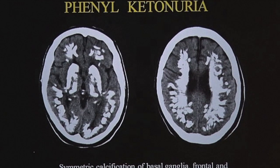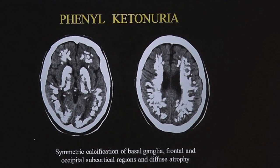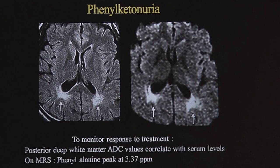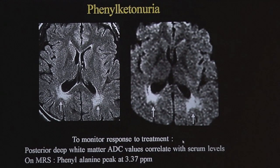In advanced cases, you get extensive calcification in the basal ganglia and periventricular white matter. Many clinicians use diffusion and absolute ADC values to check response to a ketone-free diet on MRI. If the patient is responding, ADC values will go on decreasing; if not responding, ADC values will go up, and they correlate very well with serum levels of ketones. You also look for a peak at 3.37 ppm of phenylalanine on MR spectroscopy.